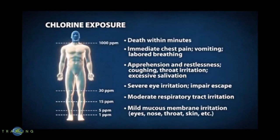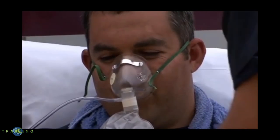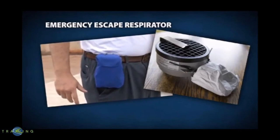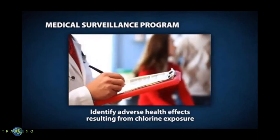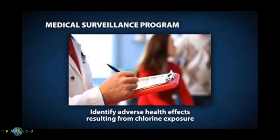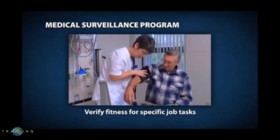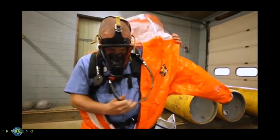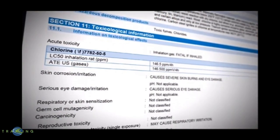In extreme cases where airborne concentrations may exceed 1,000 ppm, a person can experience severe breathing difficulty resulting in death within minutes. Symptoms may be more severe if a person has a preexisting respiratory or heart condition. All employees who work around chlorine should participate in a medical surveillance program designed to identify adverse health effects from exposure and verify a person's medical fitness for specific job tasks, especially those requiring respiratory protection equipment. For more information on health effects, refer to Section 11 of the Safety Data Sheet.